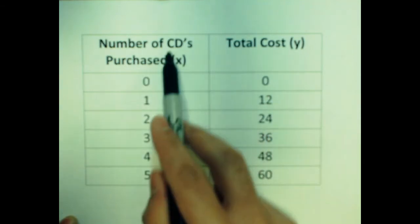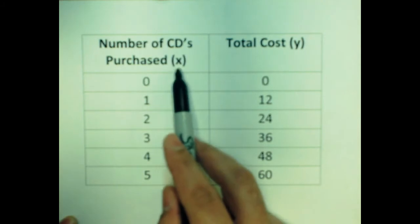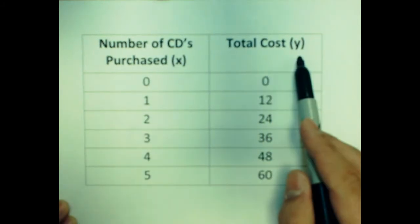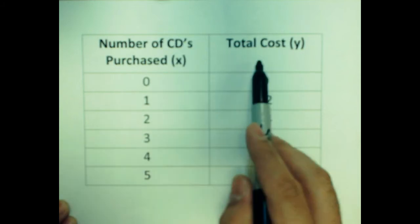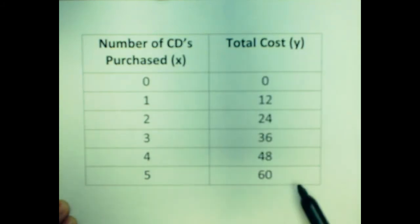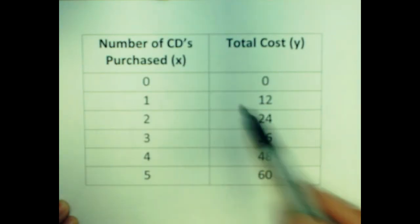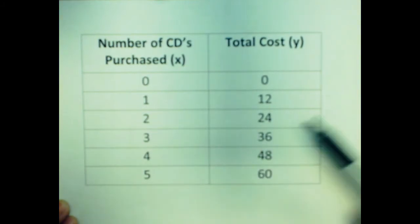Also note that the left side of the table are your x values and the right side of the table are your y values. That's how we correlate our table to a graph which will be in a later video. But as I said earlier, today we're going to learn how to determine when we have a proportional relationship from a table.